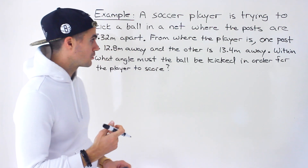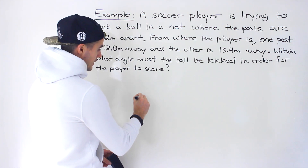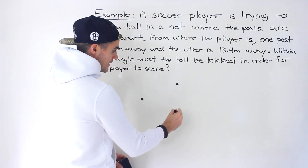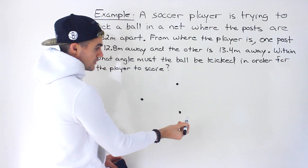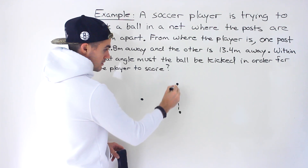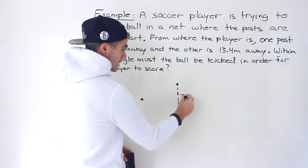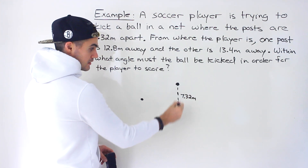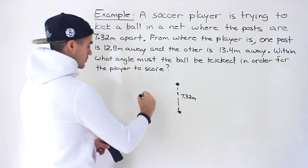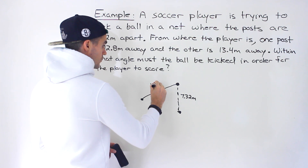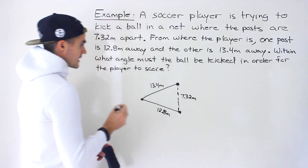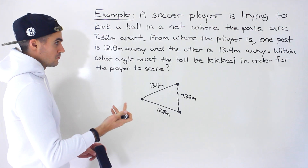So another trigonometry word problem. Let's start off with a diagram. Basically what's happening is we have a soccer player here, they are kicking a ball and trying to get it within the net. Those are the two goal posts, and we're told that the net has a width of 7.32 meters — so the ball has to go within these posts. From where the player is, one post is 13.4 meters away and the other post is 12.8 meters.